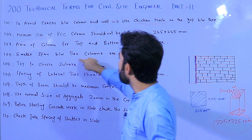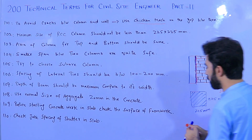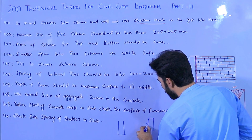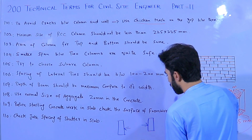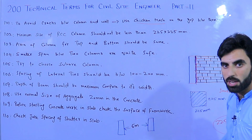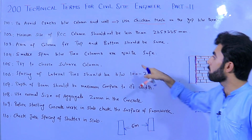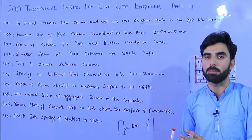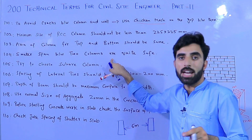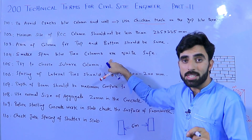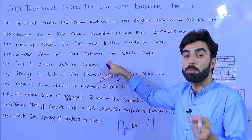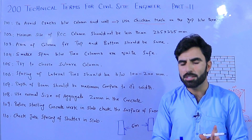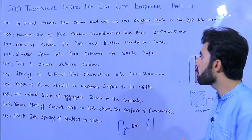Term 104: A five-meter span between two columns is quite safe. Many students ask about the spacing between columns — five meters is safe, provided the column size is not less than 300×300mm, M20 grade concrete is used, longitudinal bar diameter is not less than 12mm, lateral ties diameter is not less than 8mm, hooks are provided, and lateral tie spacing is between 100 to 200mm. Otherwise the structure may collapse.